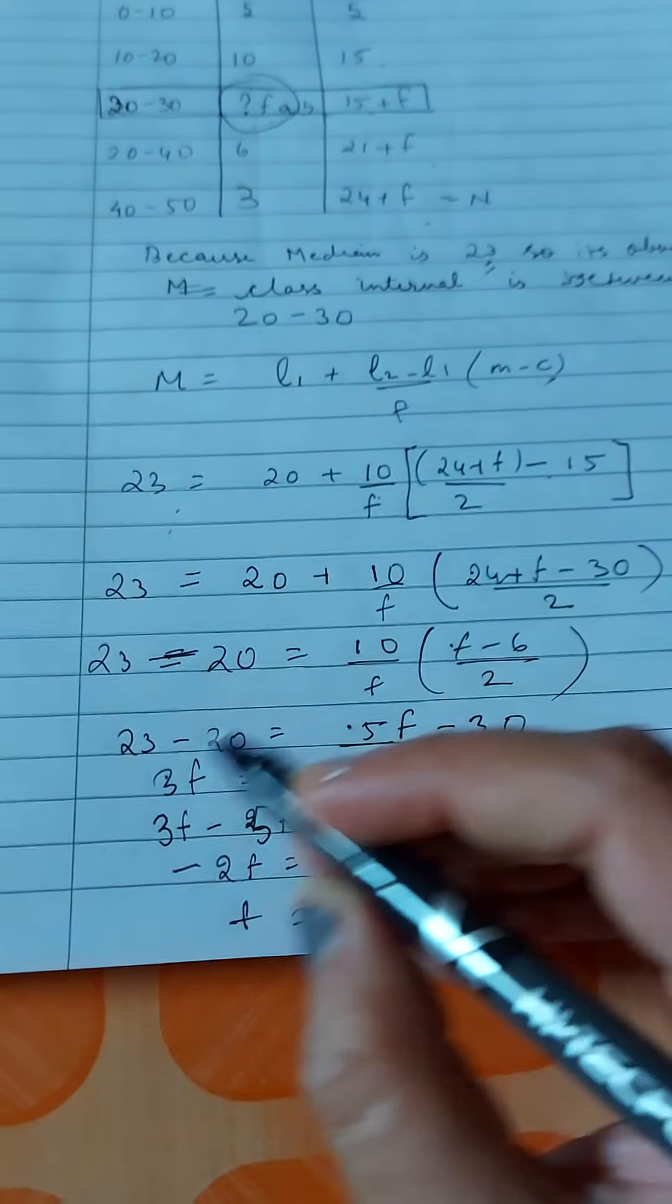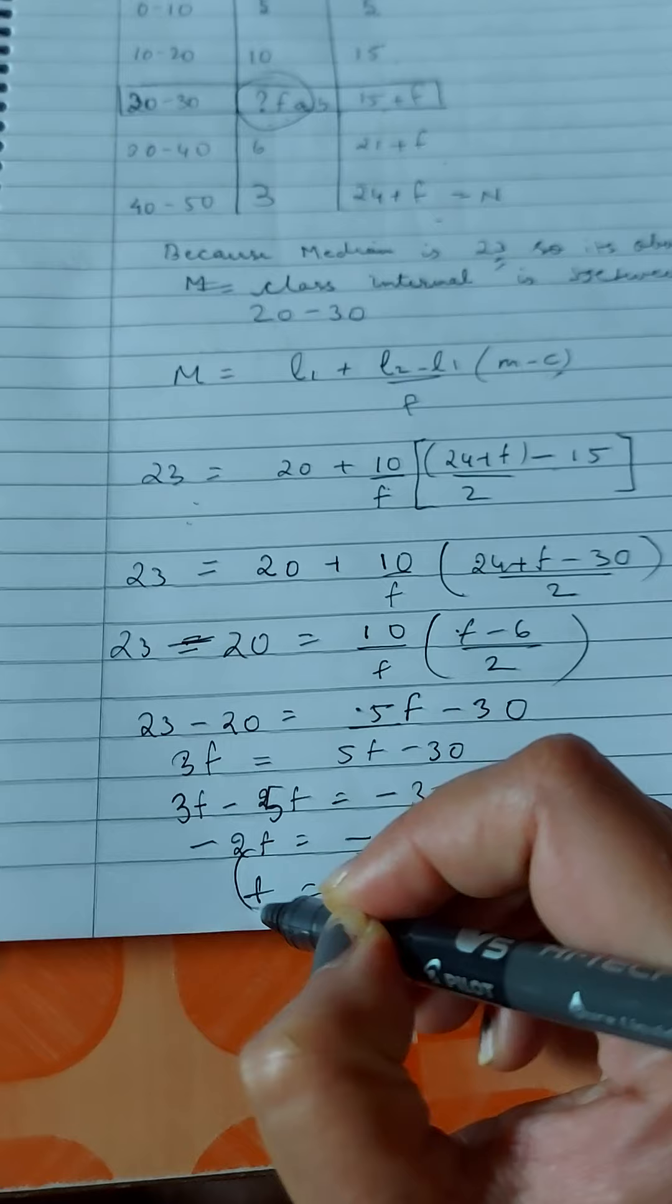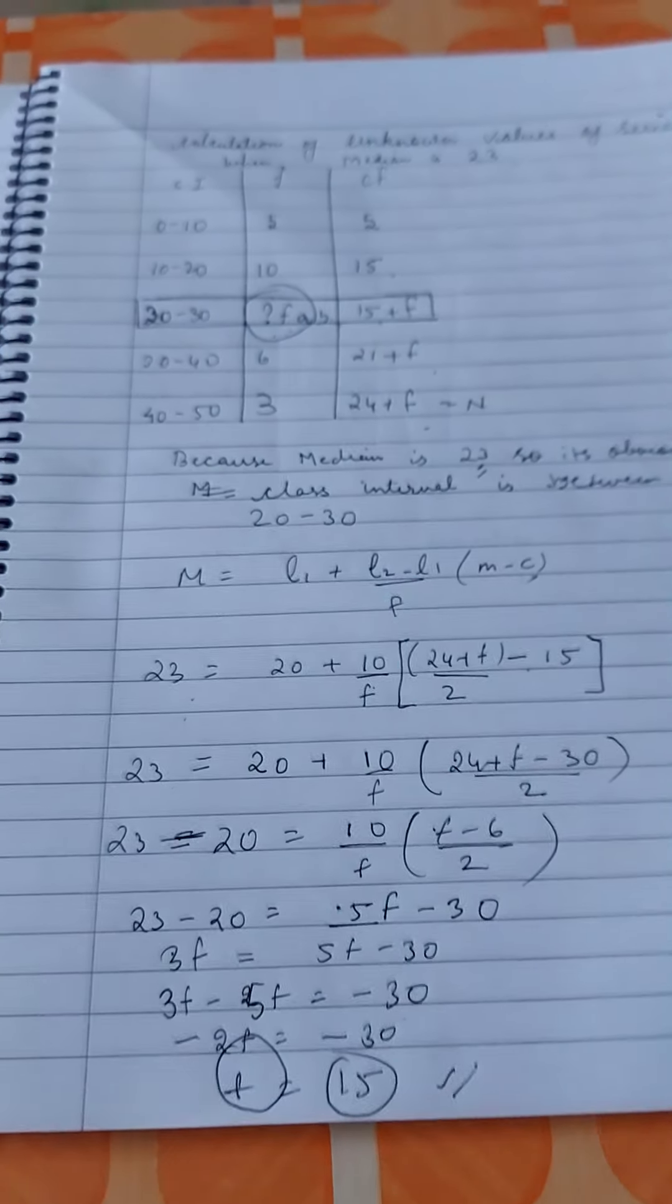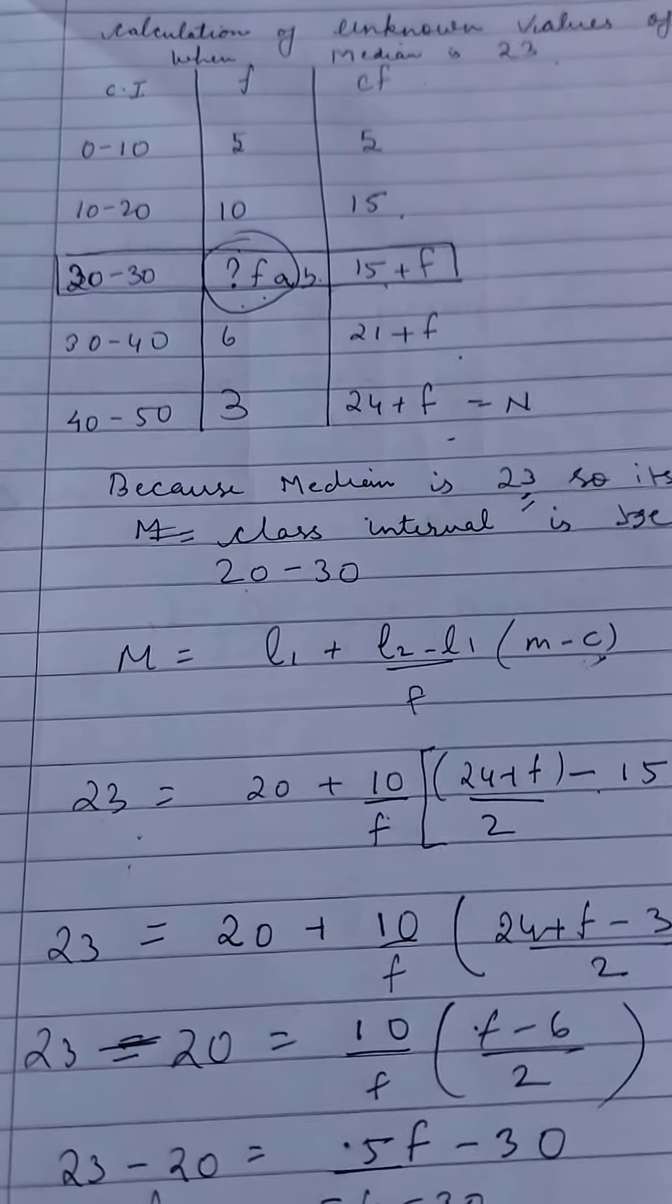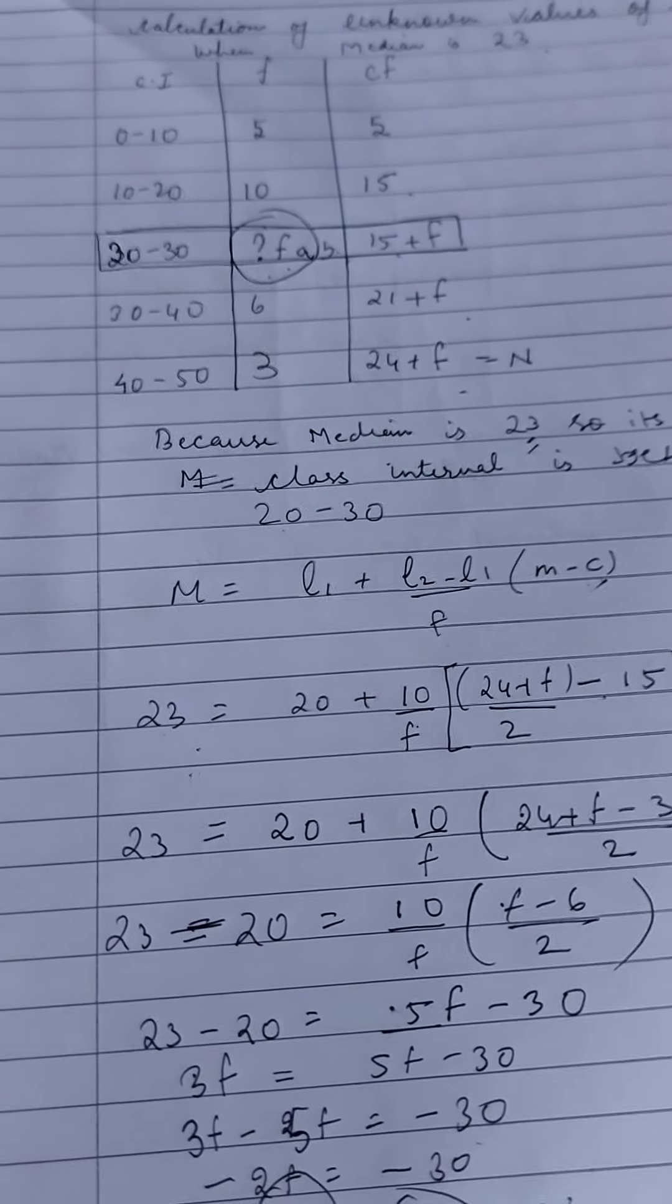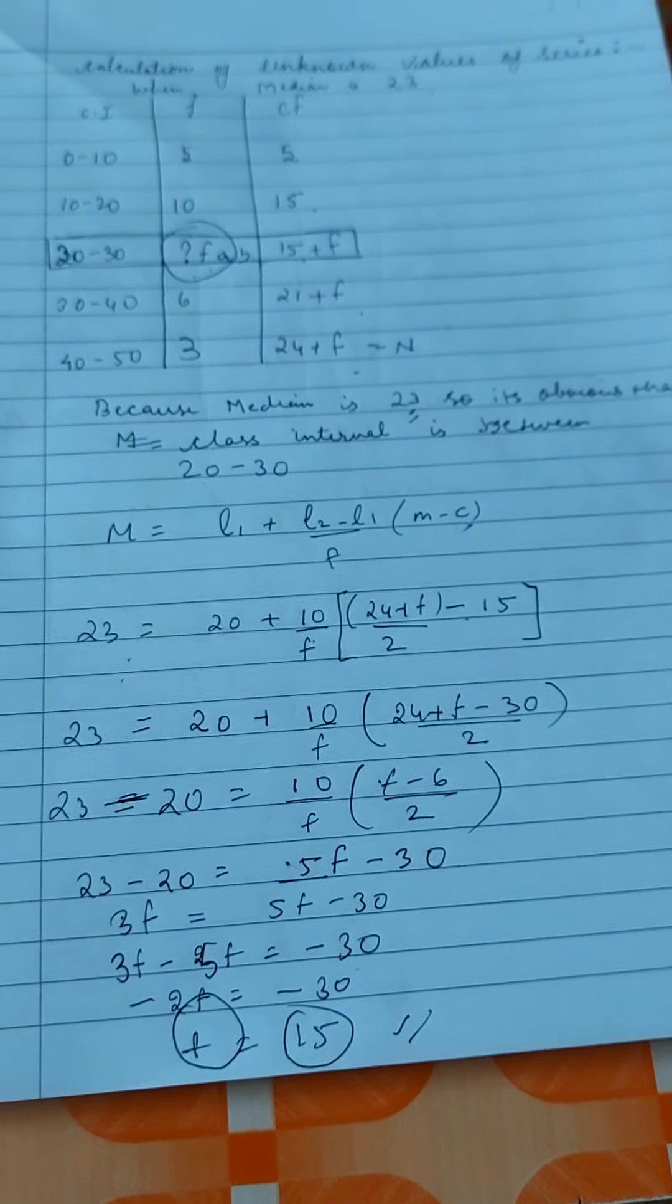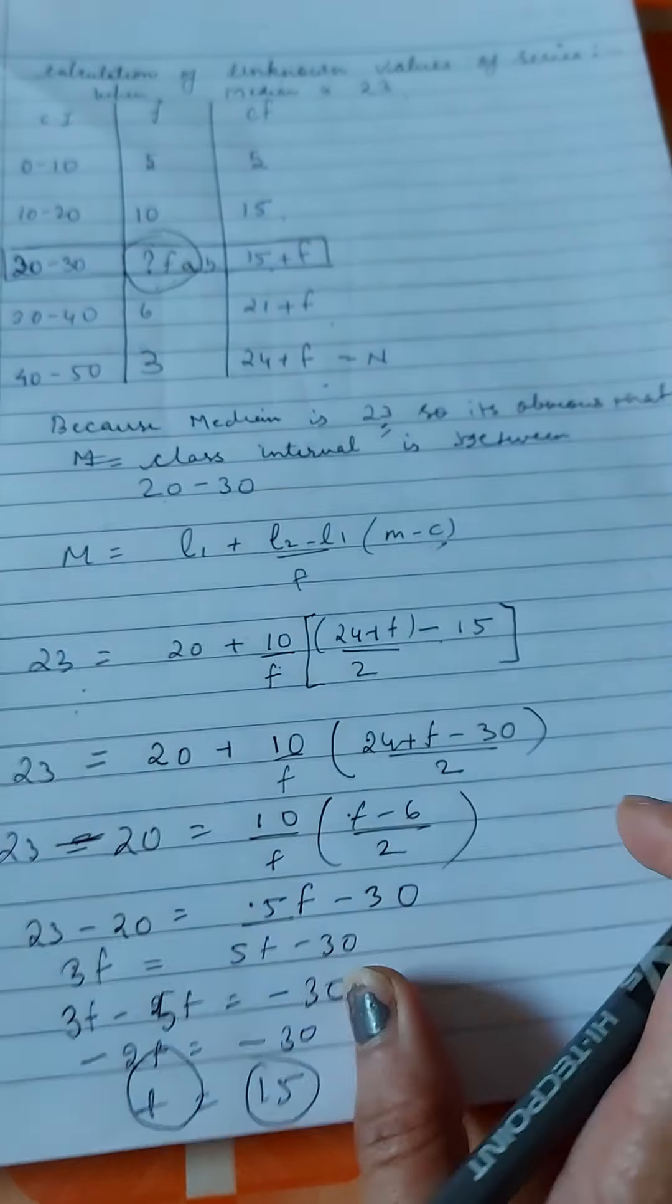When you further calculate this, the value of frequency f that we took, that answer will be 15. So this is how we find missing values. Whenever you have to find missing values, the median value will be given, and you have to calculate it with the same formula.